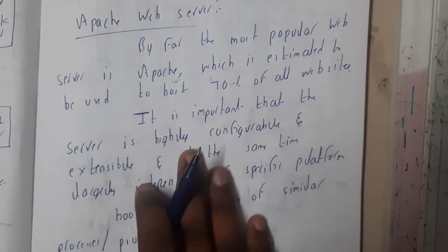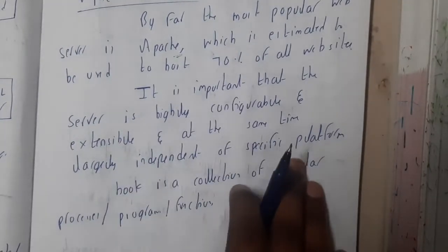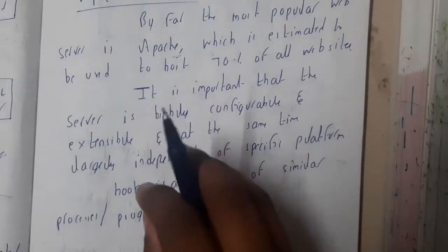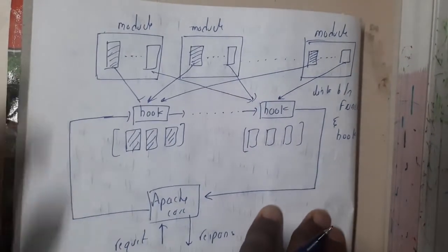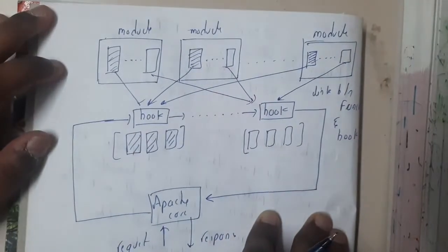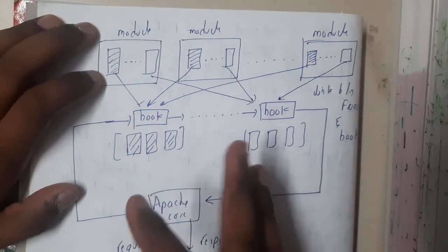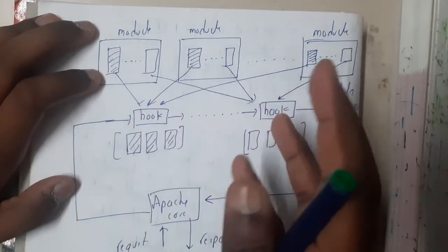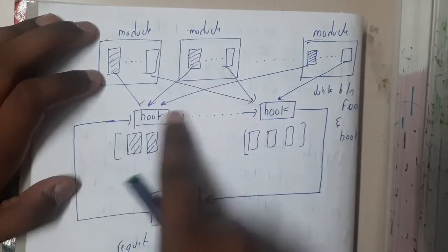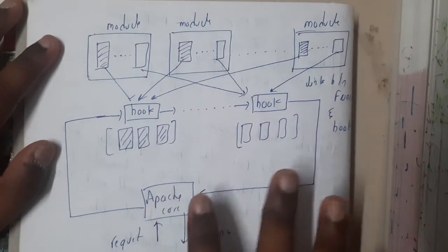It is important that the Apache server is highly configurable and extensible, and at the same time it is largely independent of a specific platform. Here we will be calling some hooks — a hook is a collection of processes or functions. The architecture works by dividing the website into multiple modules, each having some part. Similar components and functions are collected by the hooks, these hooks are connected, and Apache responds accordingly.